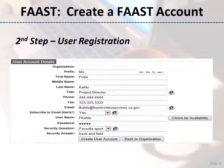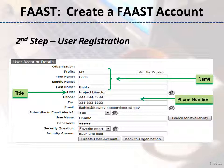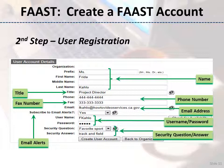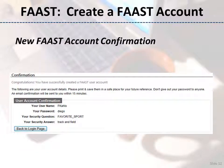In step two, the user enters account details. Enter the prefix, first and last name, title, phone and fax numbers, email address, username and password. If you want to subscribe to email alerts from FAST, select Yes from the drop-down menu. Select a security question and answer, and then click the Create User Account button. The user account confirmation page will display your username, password, and security question and answer. Click the Back to Logon page to sign in to FAST.